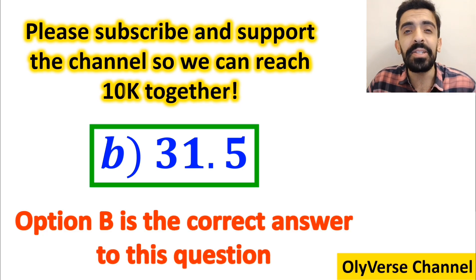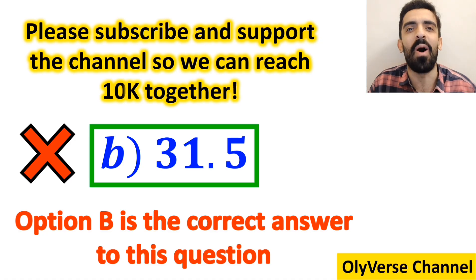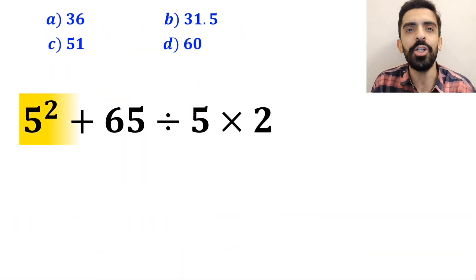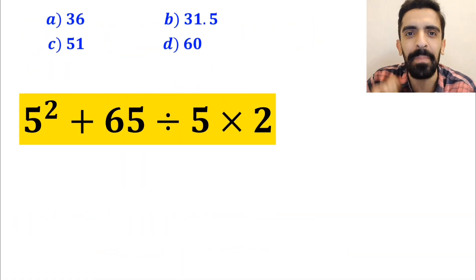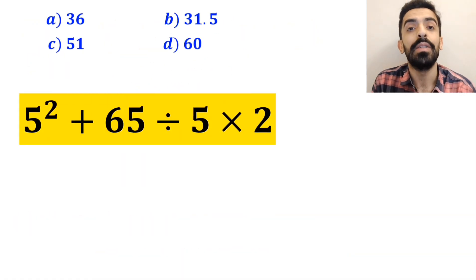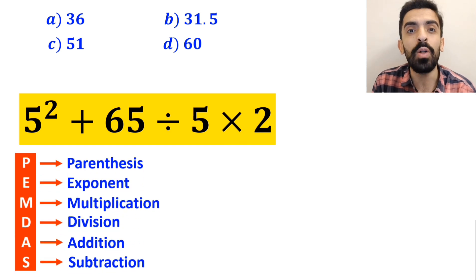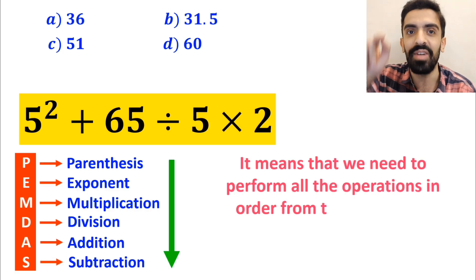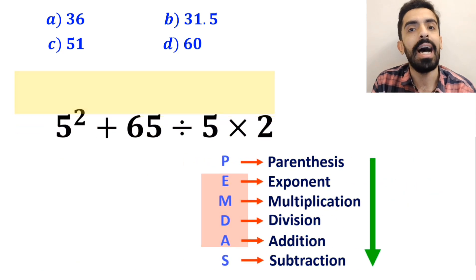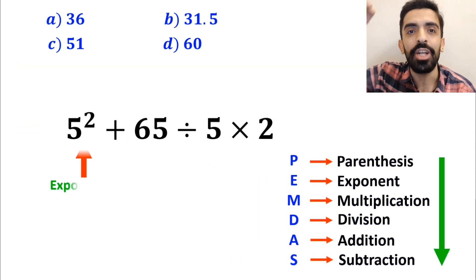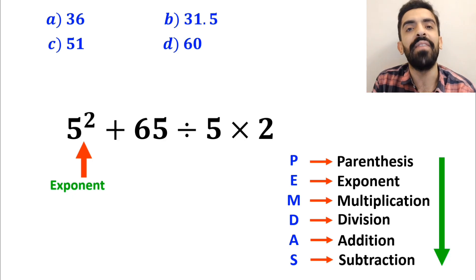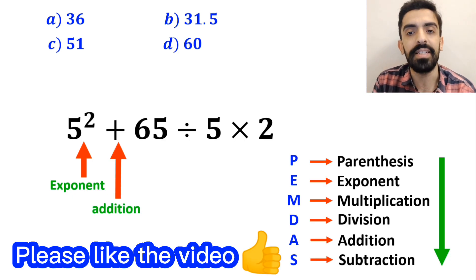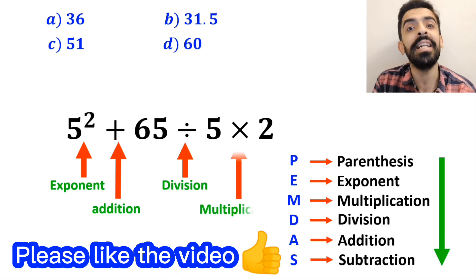However, this answer is absolutely wrong. Now let me show you how to solve this expression properly. To solve this question we must follow the PEMDAS rule step by step, performing all operations in order from top to bottom. As you can see in the image, this expression first has an exponent, then an addition sign, followed by a division, and finally a multiplication.